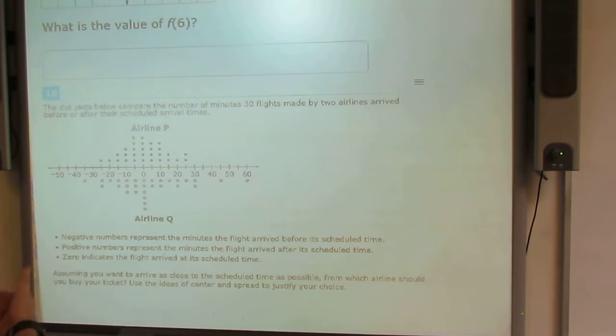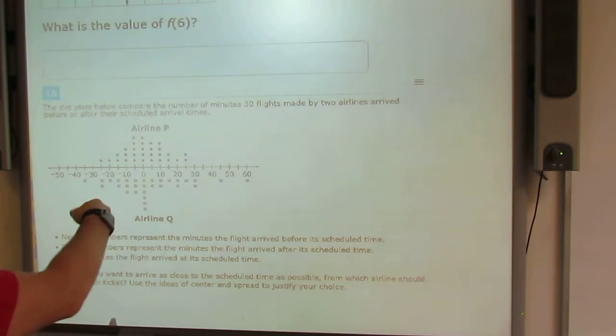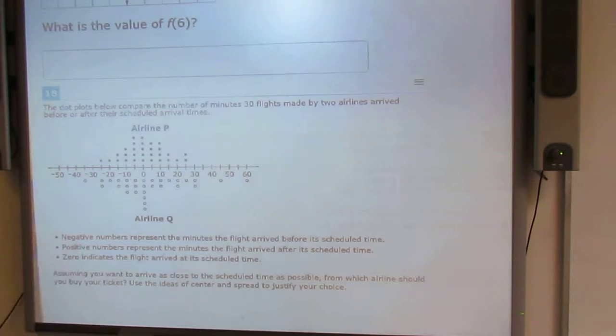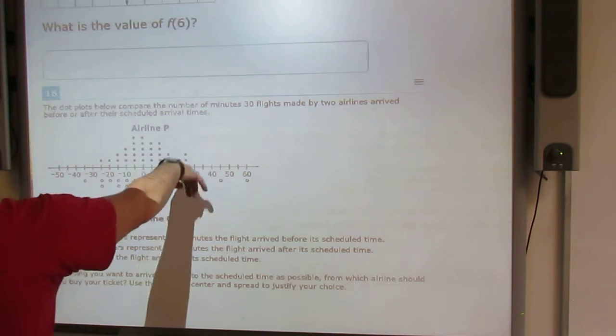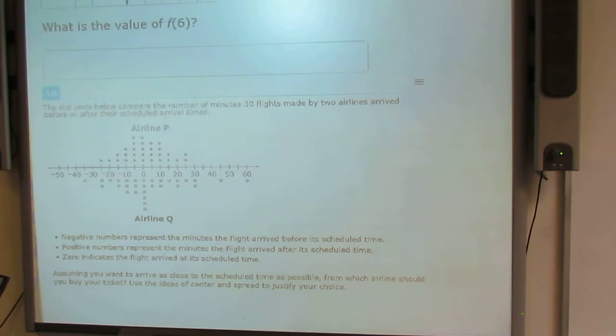Then I'm going to add my four 5s, so plus 20, plus my four 10s, which is 40, plus my two 15s, which is 30, plus my 20, plus my two 25s, which is 50.